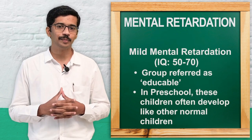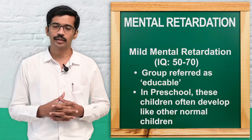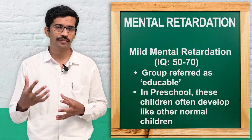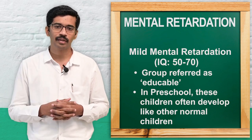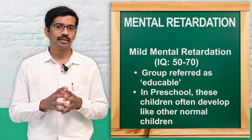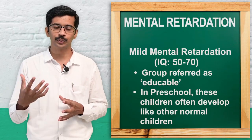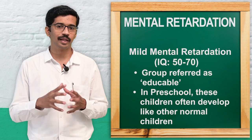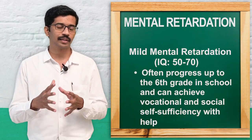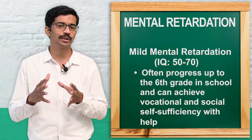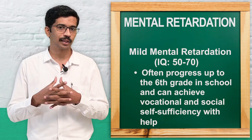Mental retardation is divided into four types: mild, moderate, severe, and profound. Mild mental retardation has an IQ ranging from 50 to 70. This group is termed the educable group, because in preschool age they develop as a normal child and can undergo school education up to sixth grade. After that there will be school dropout. They can be trained for semi-skilled work.